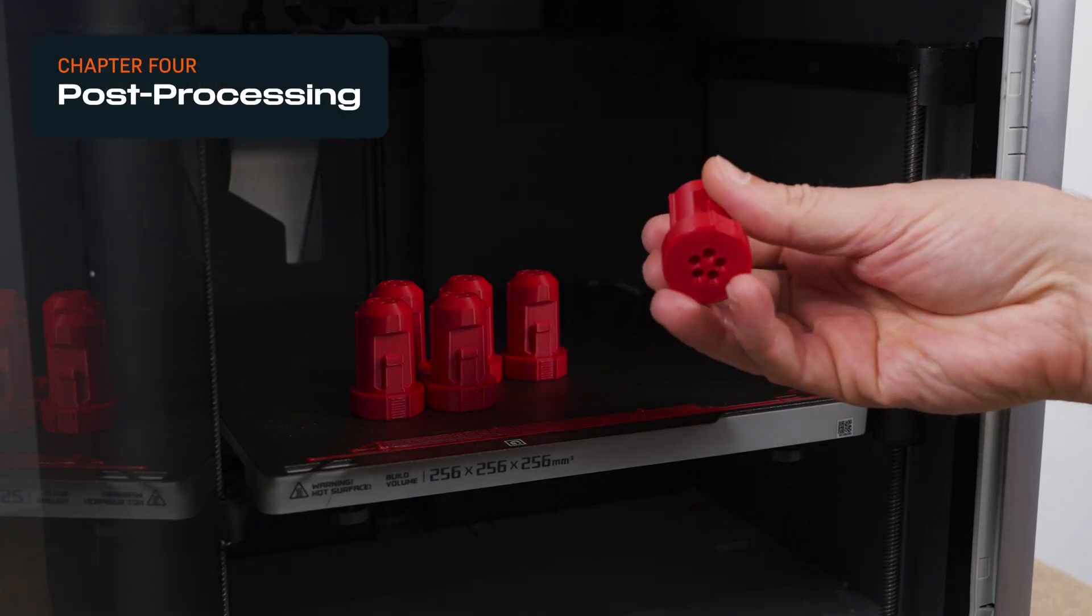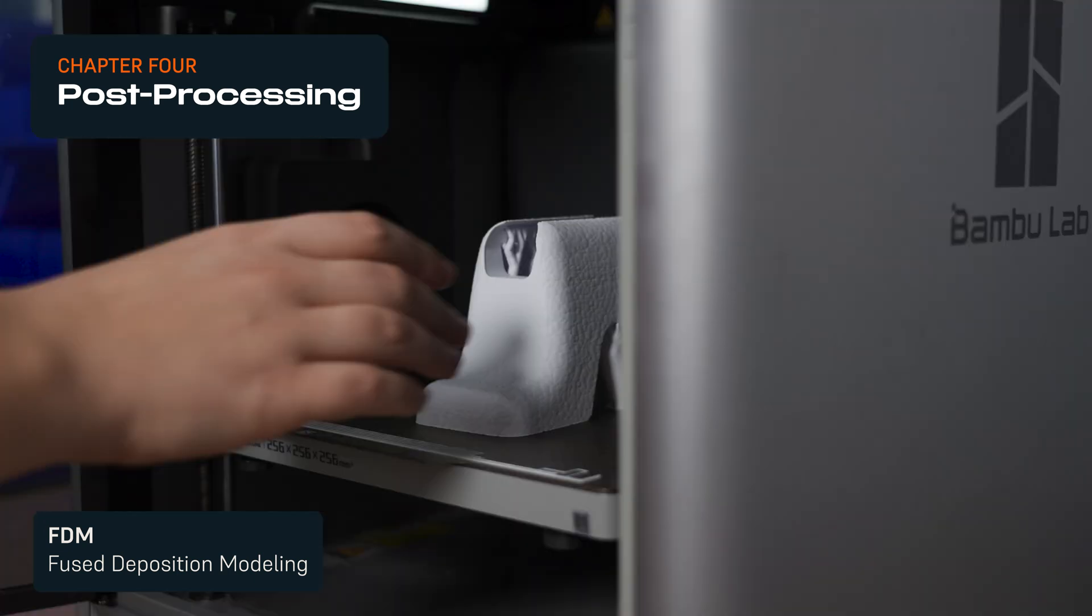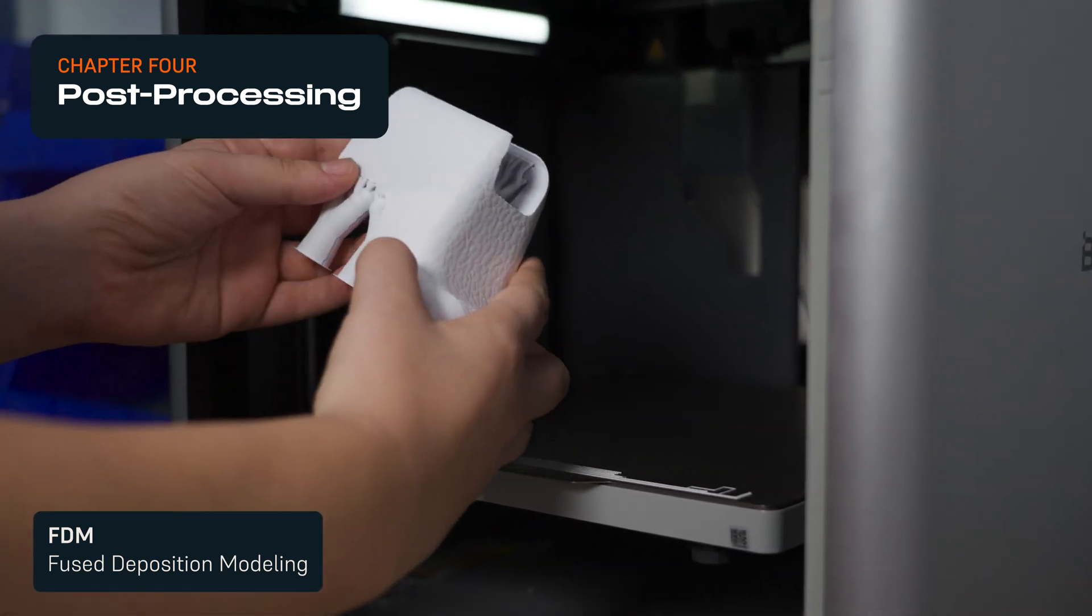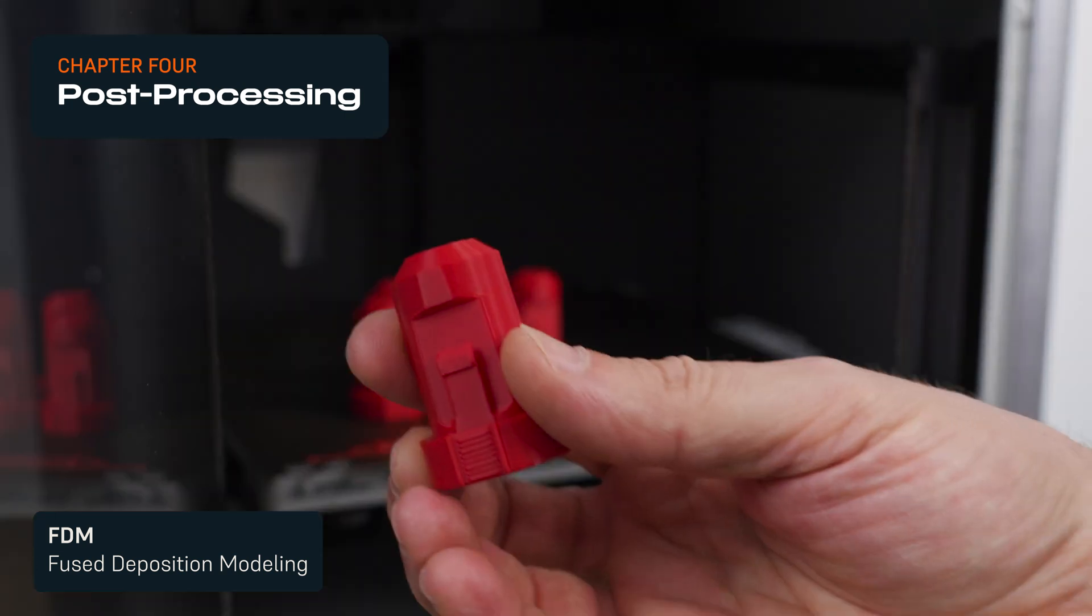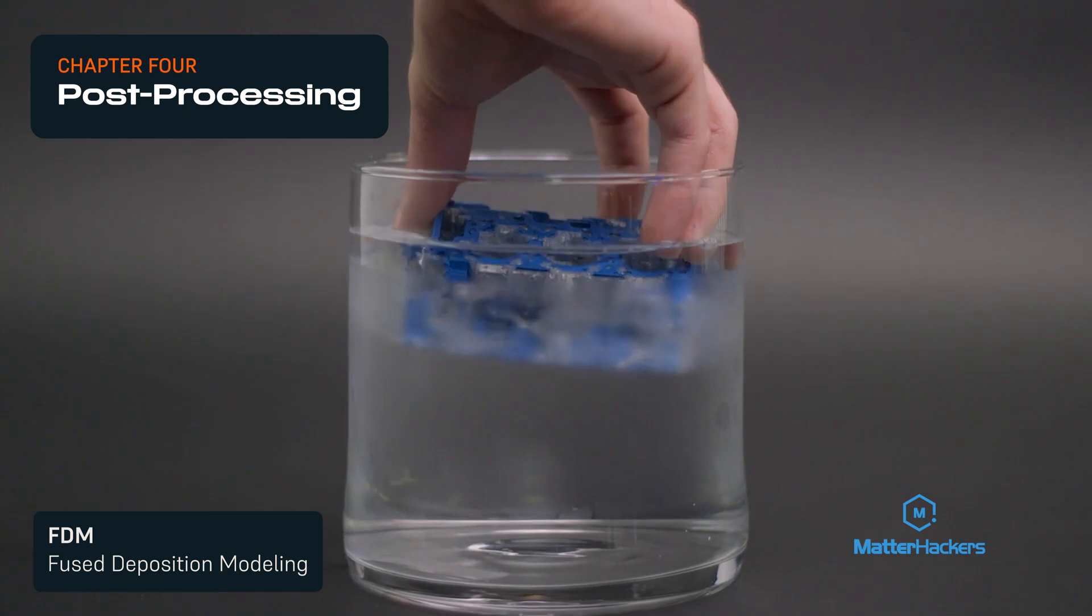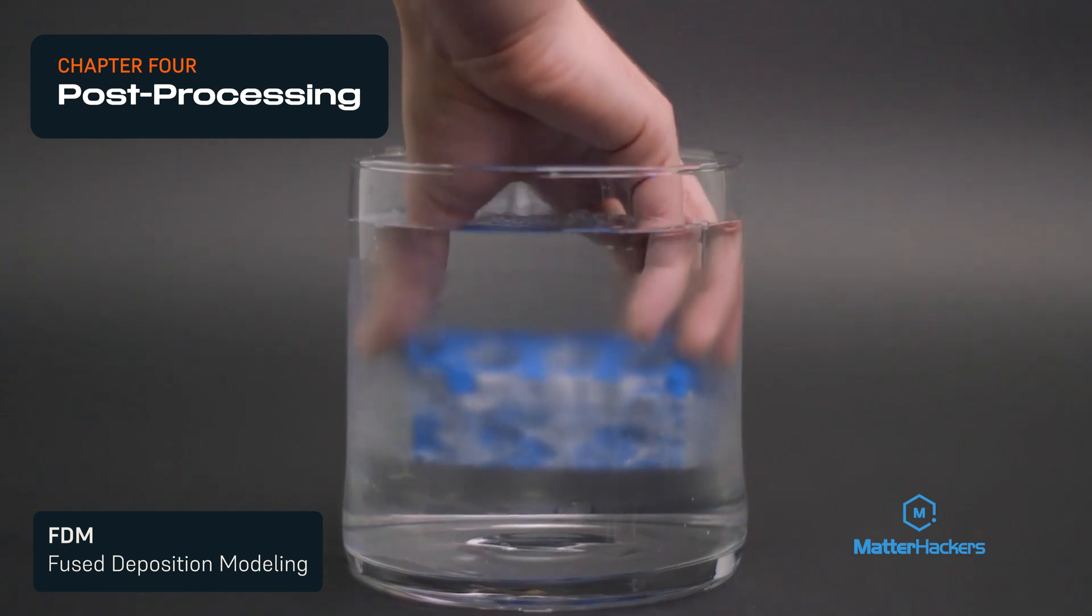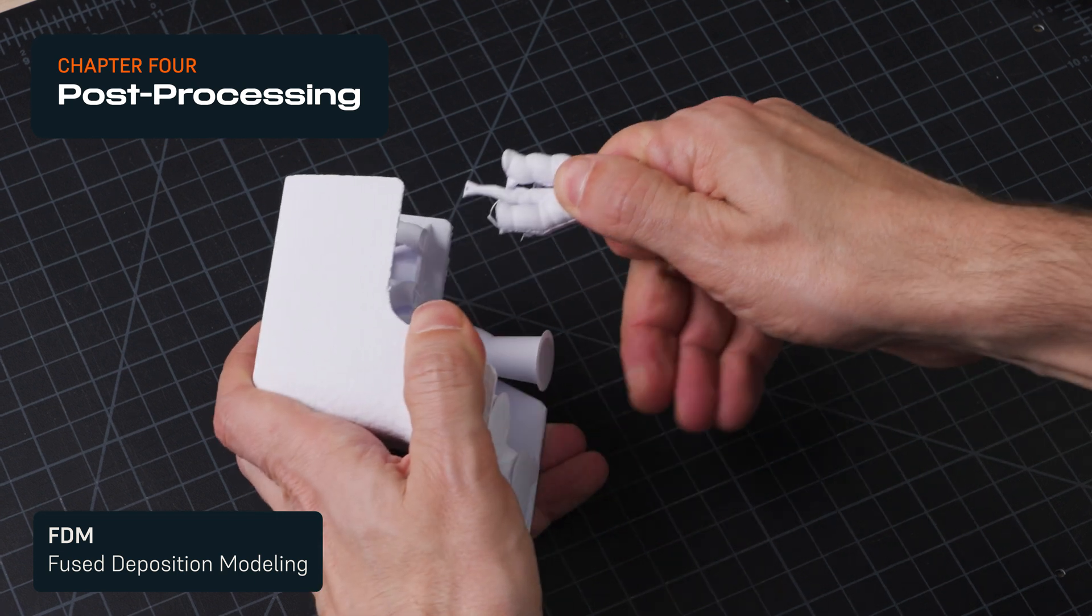Post-processing is the final step of the workflow. Post-processing FDM 3D prints can be fast and easy under some conditions. For simple designs that don't require supports, you just need to remove the printed parts from the build platform. For more complex designs that are printed on supports, you can wash away soluble supports or remove hard supports by hand.